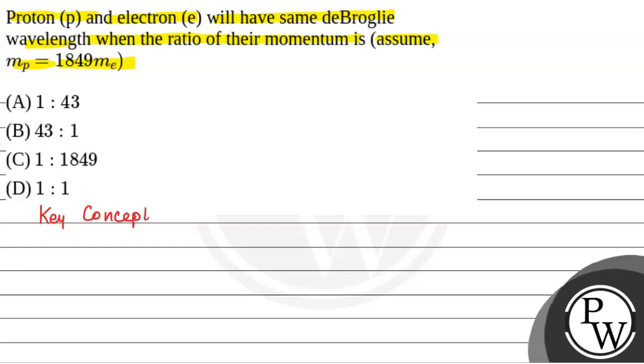The key concept that will be used to solve this question will be de Broglie wavelength: lambda is equal to h by p, where p is the momentum and h is Planck's constant.